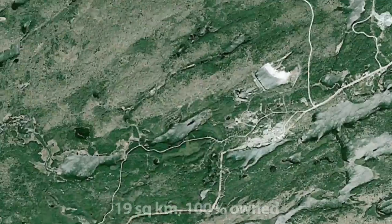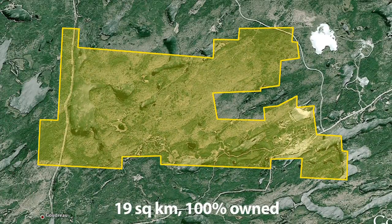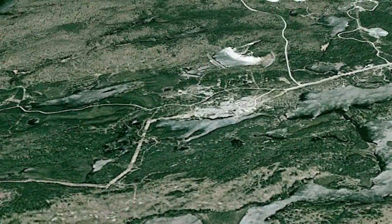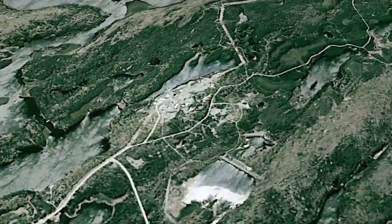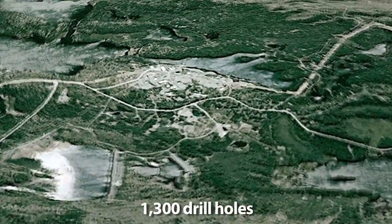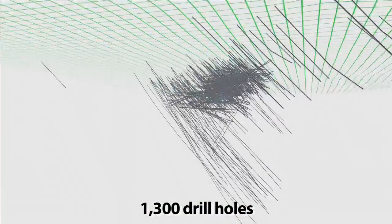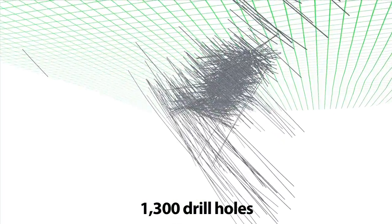The Magino Mine consists of mining claims totaling 19 square kilometers that are 100% owned by Prodigy Gold. Past and present exploration on the project includes more than 1,300 drill holes, completed from the 1970s through 2011.